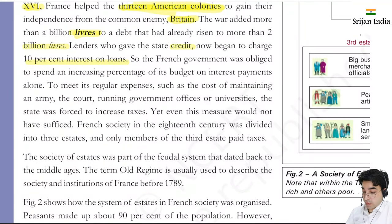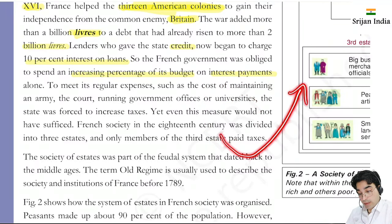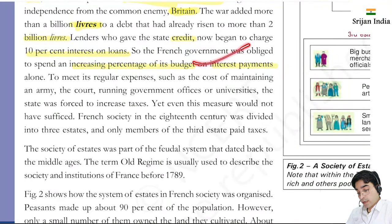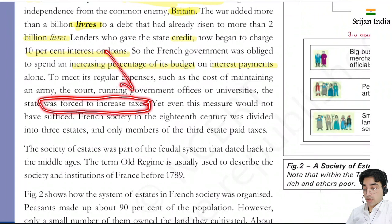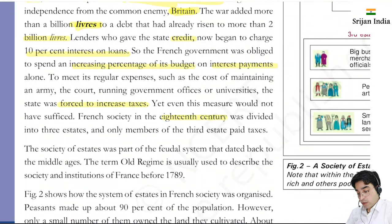If you take 100 rupees at 10 percent interest rate, you also have to pay this interest along with the capital - this created a huge load. To meet regular expenses such as maintaining an army, court, government offices, universities - the state was forced to increase taxes. Yet even this measure was not sufficient - after increasing taxes the measure still did not fulfill their needs. French society in the 18th century was divided into three estates.